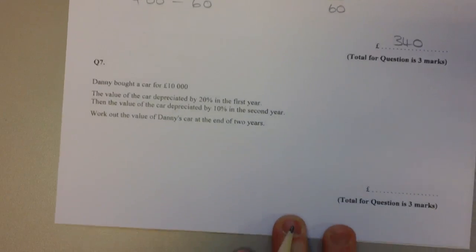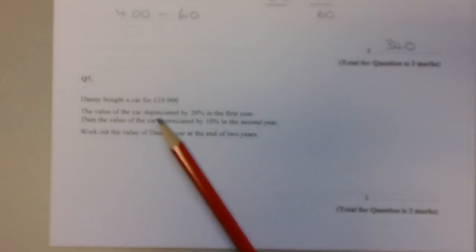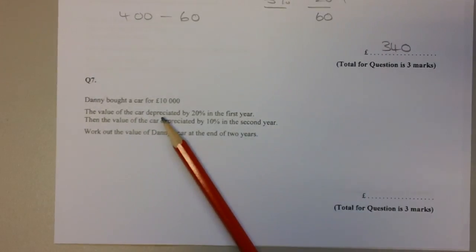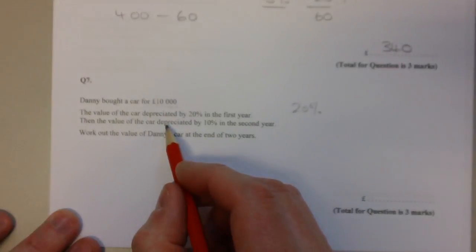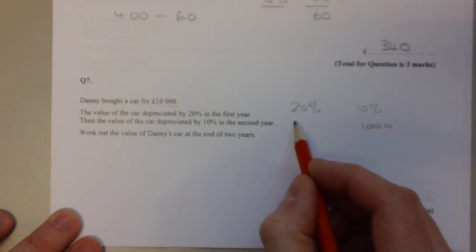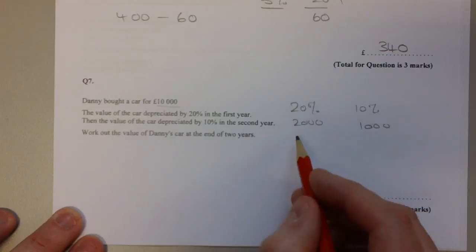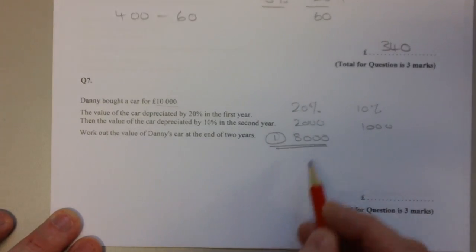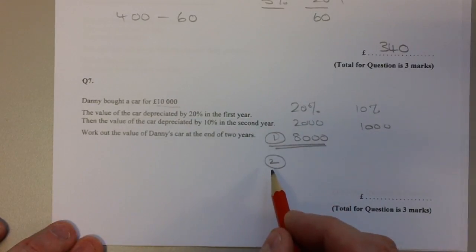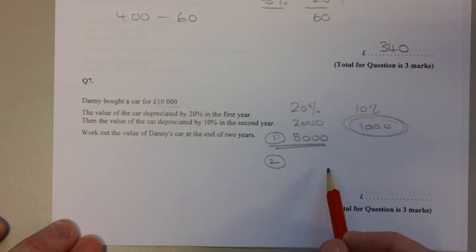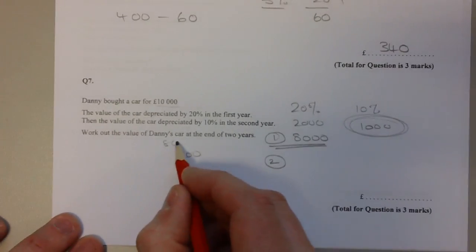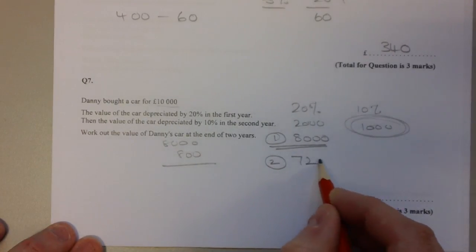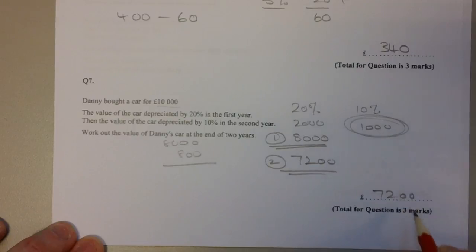Question number seven: Danny buys a car for £10,000. Depreciation is the amount of money that the car loses as it gets older. By the end of the first year it loses 20% of its value. At the end of the second year it loses 10% of its value. 20% of £10,000 - well, 10% would be £1,000, so 20% would be £2,000. At the end of the first year the car is worth £8,000. In the second year it loses 10% of its value, but that's not this. The car is now worth £8,000, so 10% of its value is now £800. We need to take £800 away from £8,000. The car is worth £7,200 at the end of the second year.